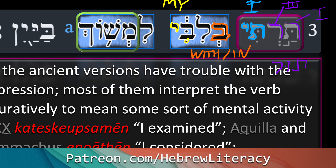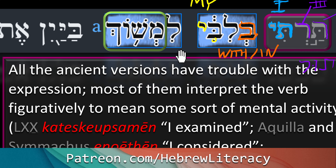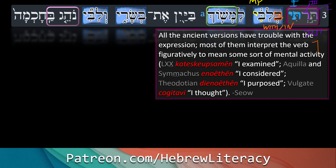So perhaps 'I considered' or 'I purposed in my mind' — going with Theodotion here. Next: 'limshoch.' The lamed is another inseparable preposition meaning 'to.' The verb is 'mashach,' and the reason we have the construct square around it is that when you want to express an English infinitive — like 'to run' or 'to dance' — we have a lamed appended to the infinitive construct form, because you can put a suffix on the end of it.